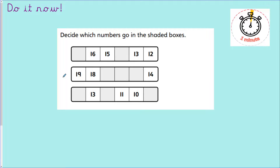I hope you've all had a chance to do this. Let's do it together. Before we fill in the missing numbers, we always need to look at the pattern — are the numbers going up or down? 16, 15, 13, 12 — the numbers are getting smaller so we are counting backwards. What number comes after 16? 17. Let's check: 17, 16, 15, 14, 13, 12. Excellent, well done.